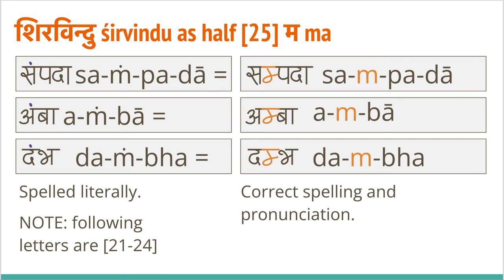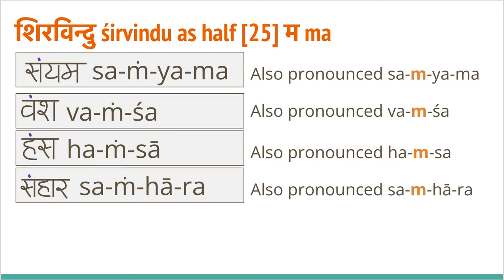Now sirvindu as half ma — the closest spelling and pronunciation of sirvindu is ma, half ma. Therefore there will be more examples of sirvindu being pronounced this way. 'Sampada' — if written with sirvindu it's better to write with half ma because ma belongs to pa barga. 'Amba', 'damva' — it's better to write as the nasal sound, the half nasal sound of that particular barga. The sirvindu here represents ma, which is the nasal sound of pa barga. Lastly, sirvindu as half ma in cases where it's not followed by pa barga: 'samya', 'bamsa', 'hamsa', 'samhara'.